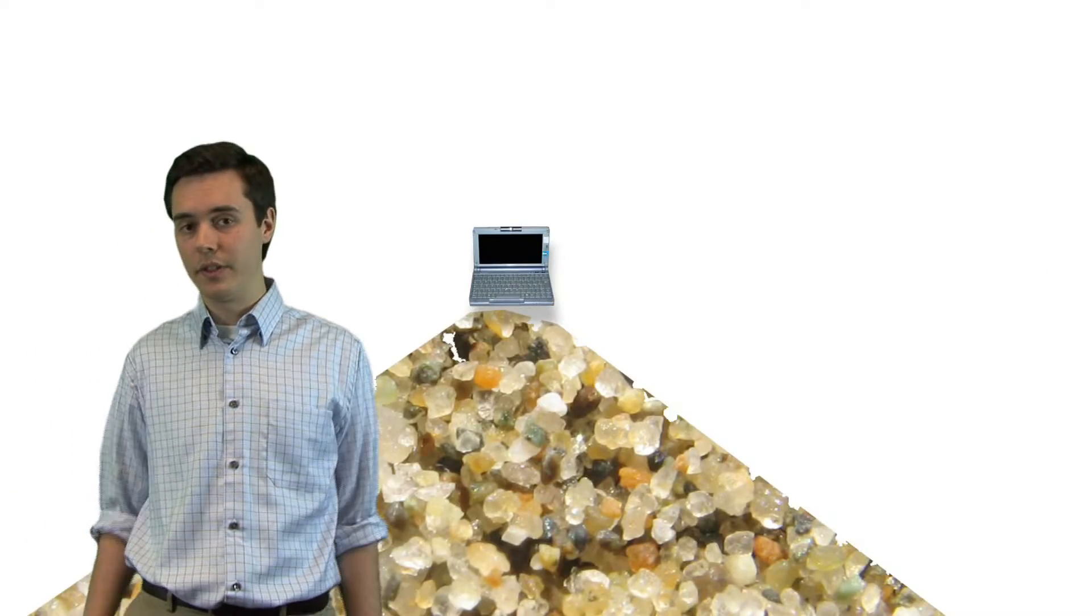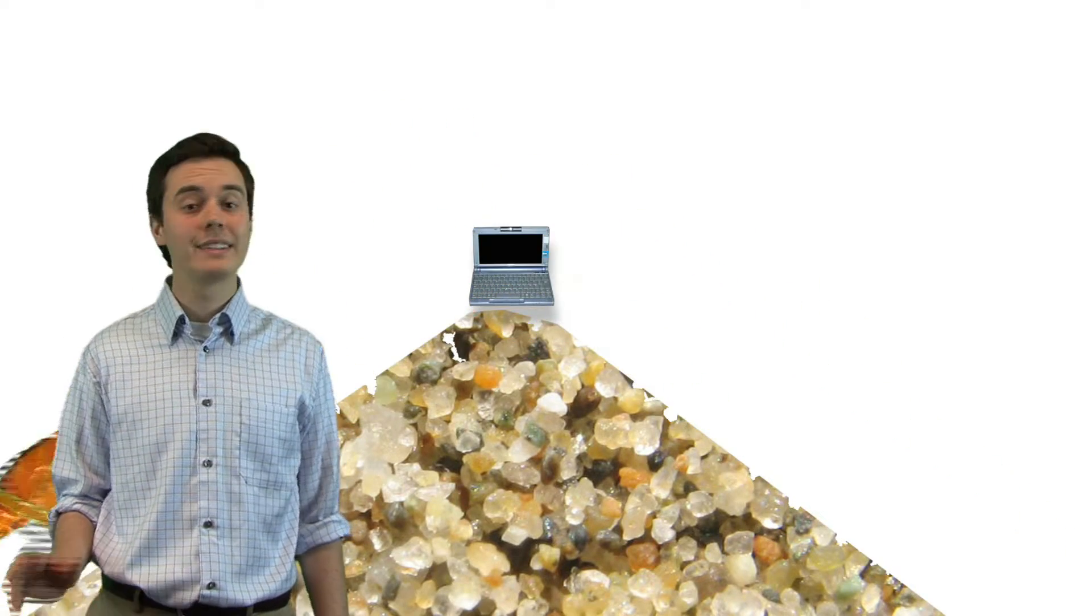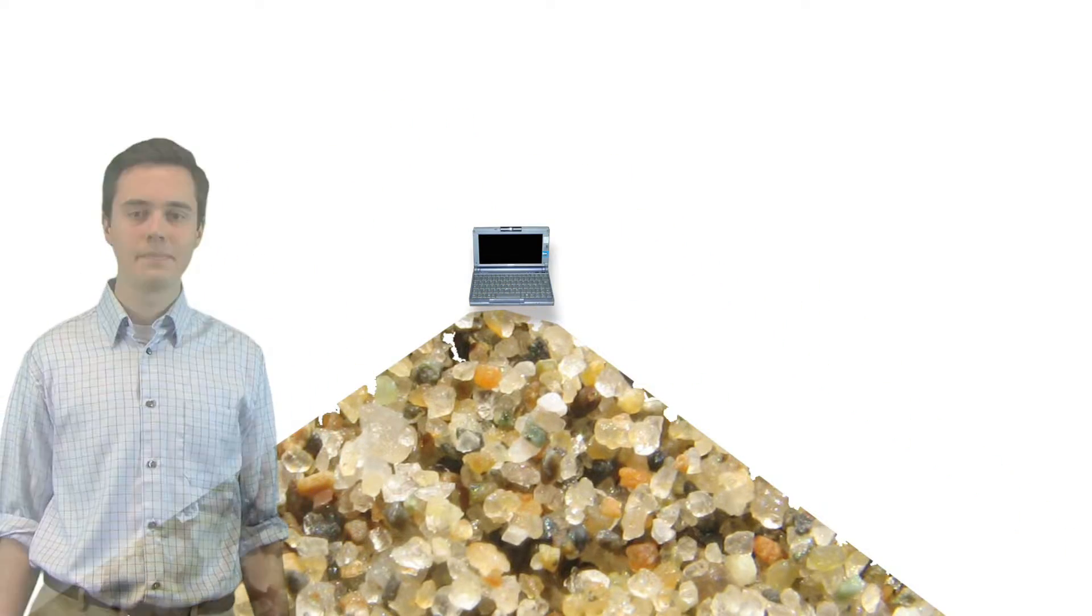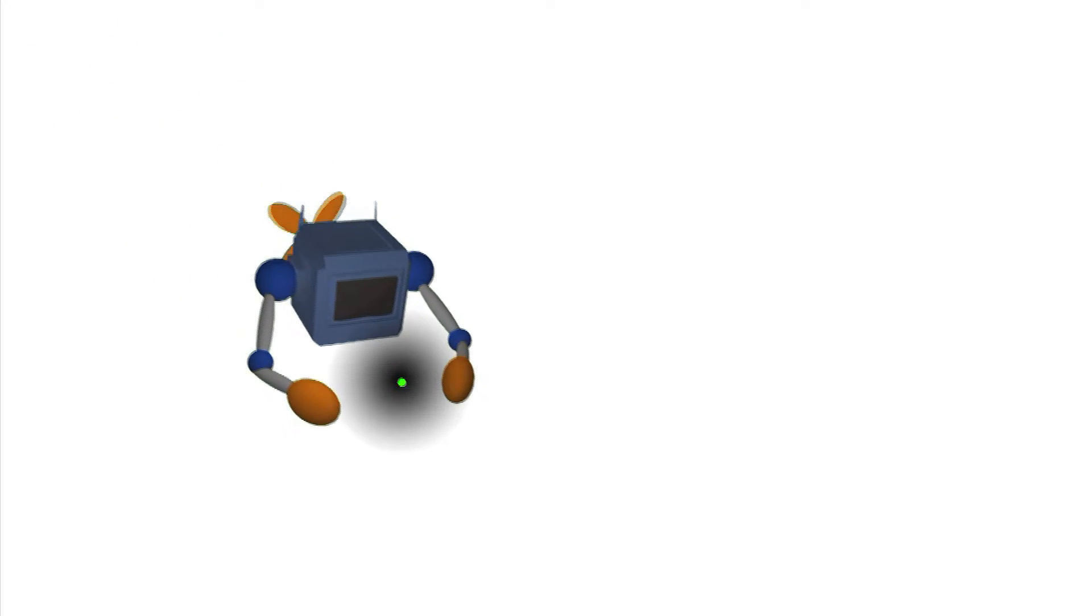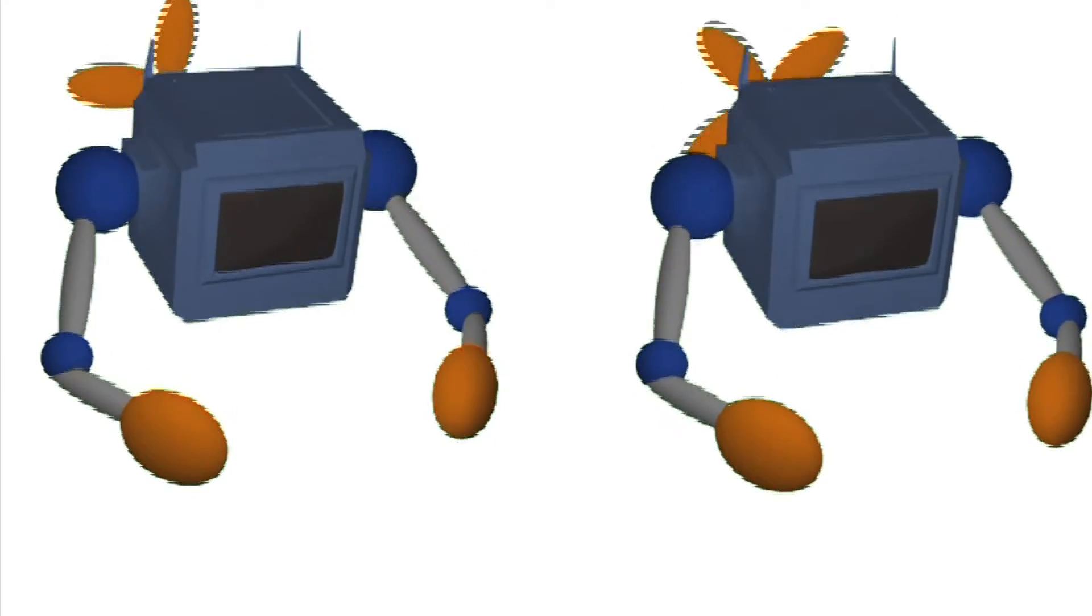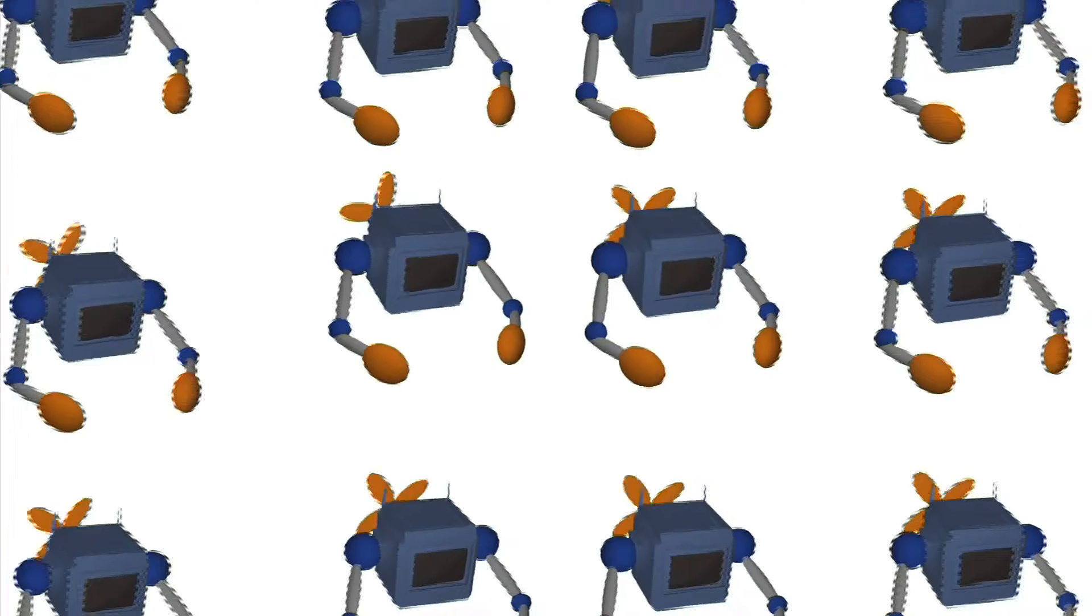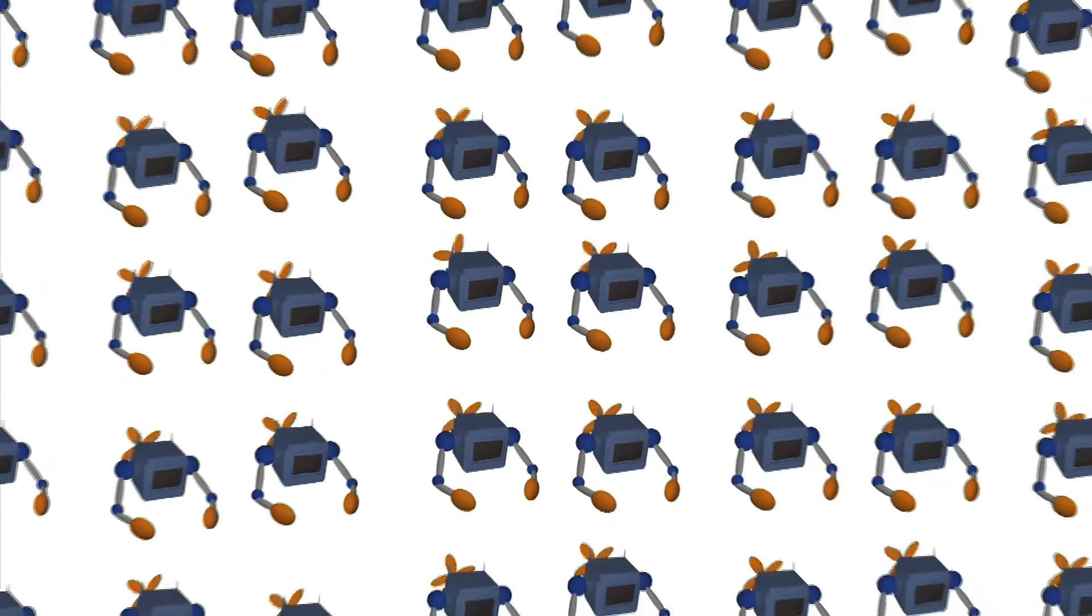Nanotechnology may give us computers the size of a grain of sand, but more powerful than a desktop computer today. Nano assemblers may build those computers atom by atom and molecule by molecule. But these nanomachines could also build more nanomachines or self-assemble. This is an important feature, because in this way you can create a huge amount of nanomachines very quickly.